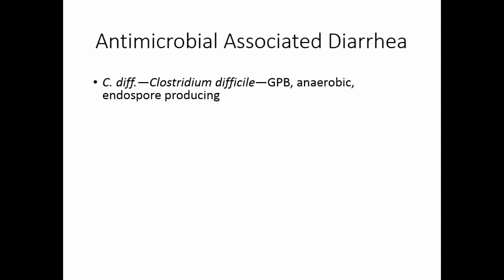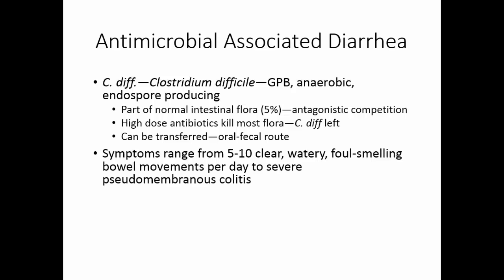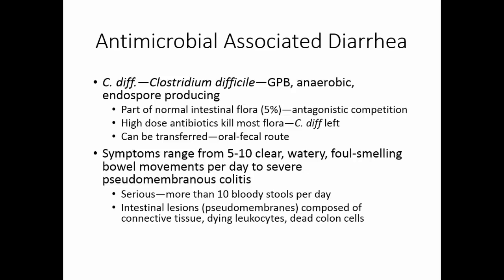Antimicrobial-associated diarrhea, better known as C. diff, is caused by Clostridium difficile, a gram-positive anaerobic endospore-producing bacteria. It is part of the normal intestinal flora of about 5% of the population, kept in small numbers by antagonistic competition from other flora. However, high doses of antibiotics can kill most of that flora, and since C. difficile is very antibiotic resistant, it is left behind and can grow to cause diarrhea. The organism can be transferred patient to patient via the oral-fecal route. Symptoms range from a relatively mild diarrhea of 5 to 10 watery, foul-smelling bowel movements per day to severe pseudomembranous colitis, in which there are more than 10 bloody stools per day, with intestinal lesions composed of connective tissue, dying white blood cells, and dead colon cells forming pseudomembranes.